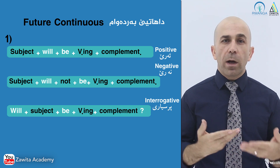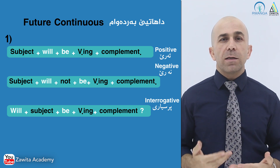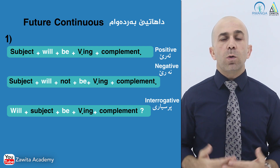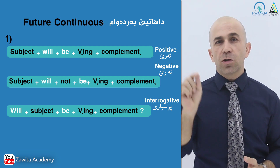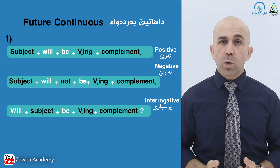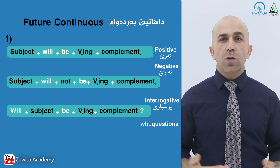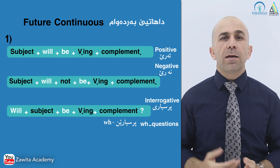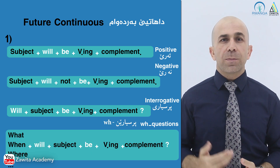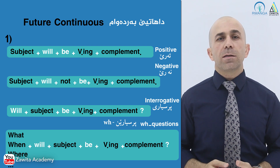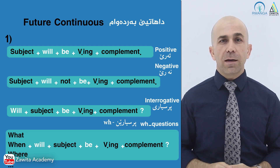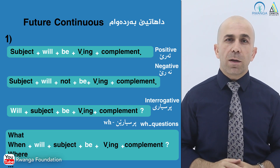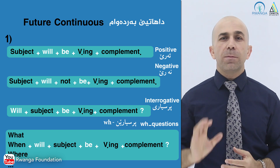For the interrogative form, the rule is: will plus subject plus be plus verb-ing plus complement. And if you want to use this rule with WH questions, the structure is: WH question plus will plus subject plus be plus verb-ing plus complement.